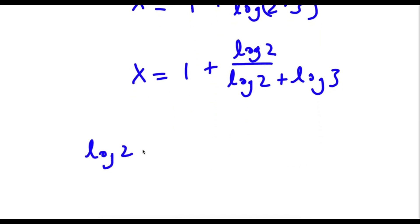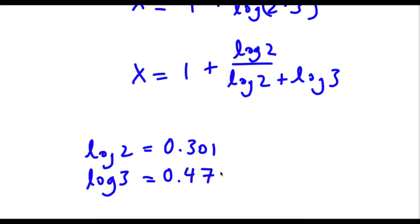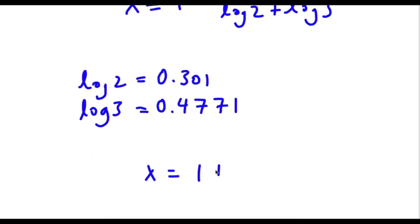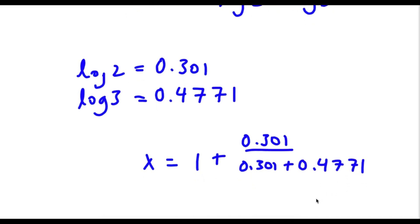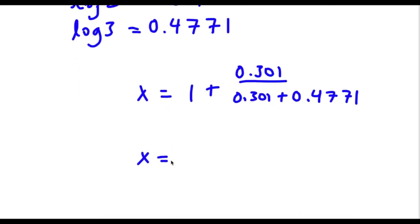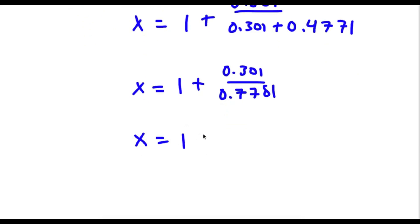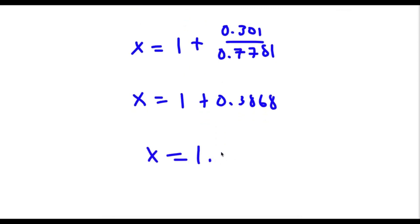Now log 2 is equal to 0.301 and log 3 is equal to 0.4771. So now I have x is equal to 1 plus 0.301 over 0.301 plus 0.4771, which gives x equal to 1 plus 0.301 over 0.7781. Now I have x is equal to 1 plus 0.3868, so x is equal to 1.3868.